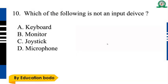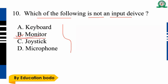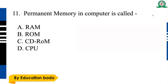Question number ten: Which of the following is not an input device? Option B is the right answer — Monitor. Monitor is an output device, not an input device. Option B is the right answer.